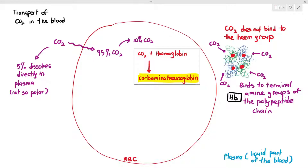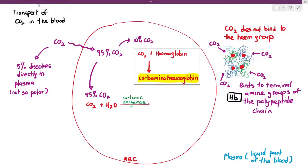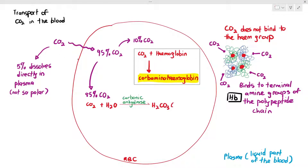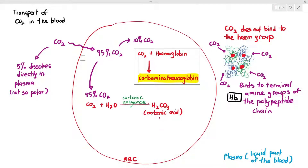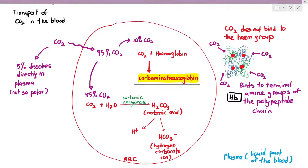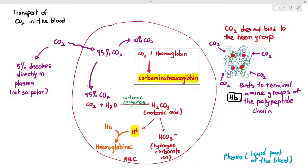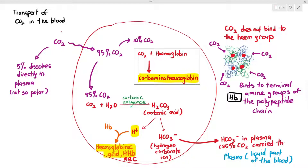From that 95%, 10% binds directly to hemoglobin. That leaves 85% of the carbon dioxide. This 85% will bind together with water, catalyzed by an enzyme known as carbonic anhydrase, to form carbonic acid (H2CO3). The carbonic acid then splits to become hydrogen carbonate ions (negative ions) and hydrogen ions (positive ions). The hydrogen ions bind directly to hemoglobin to form hemoglobinic acid (HHb), and the hydrogen carbonate ions diffuse into the plasma. 85% of carbon dioxide is actually transported this way — because hydrogen carbonate ions are polar anions with charges, making it very easy for them to dissolve in the plasma.